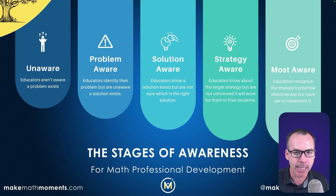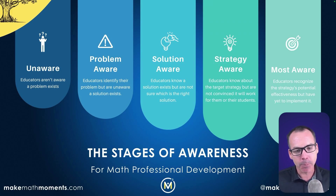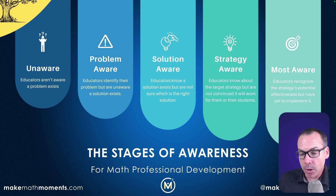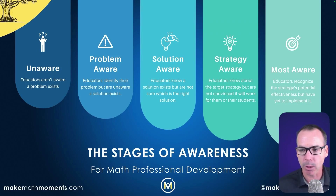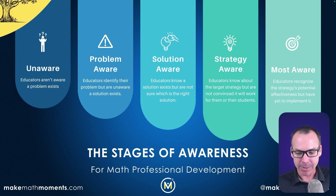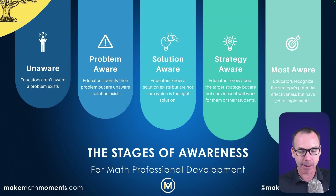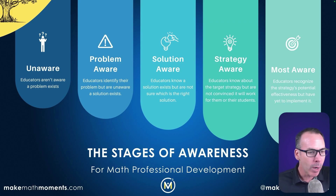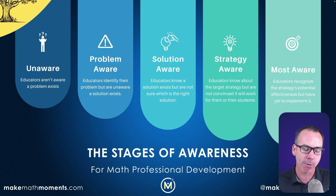This is where our professional development usually lives — if we correctly identify what a problem is for our teacher, we then shift them into the solution aware stage. Educators know a solution exists, but they're not sure the solution is right for them. Maybe they've made the connection that discourse is an actual problem in their classroom and they don't have it and they need it. But then they're also saying, I don't know what the right solution is, or where those solutions are. And this is where we live in professional development.